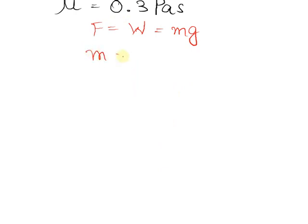Mass m is equals to rho into v where rho is the density and v is volume and volume v for a cylinder is given as pi by 4 d square into l.